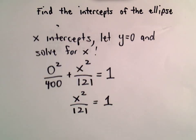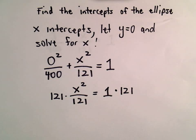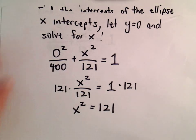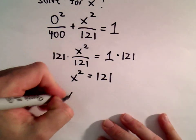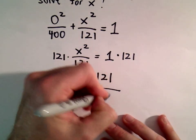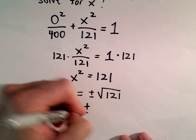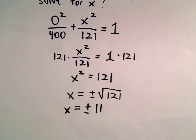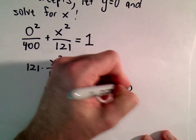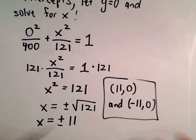What I would simply do is multiply both sides by 121. On the left side, we'll just be left with x squared equals 121. Now take the square root of both sides — don't forget to include your positive and negative — and the square root of 121 is 11. So the x-intercepts will be at the points (11, 0) and (−11, 0).